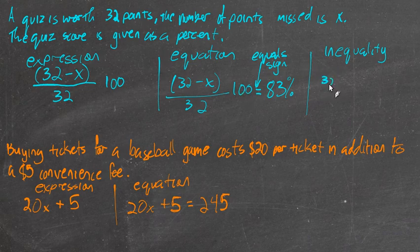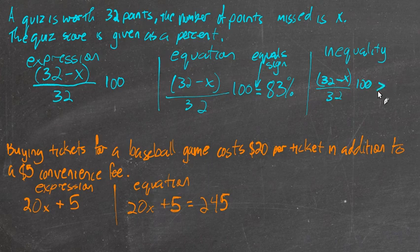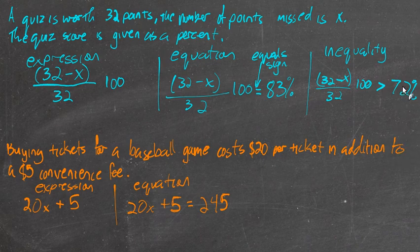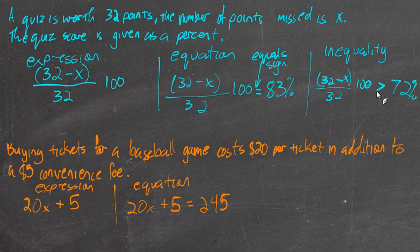What could an inequality be representing in this situation? Well, this 32 minus x divided by 32 times 100, if I said that this was greater than 72, right, greater than 72%, what might that represent in a real-life situation? If we're talking about a quiz, and we're saying that this represents your score given the number that you missed, and that score, your score, is greater than 72%